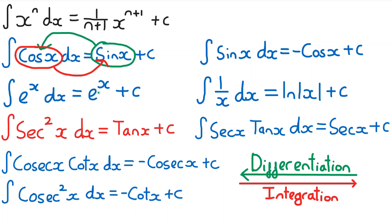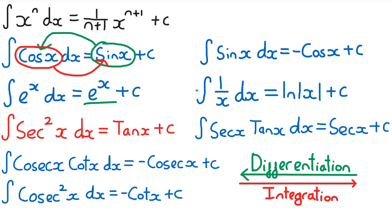The integral of e to the power of x is really simple because when you differentiate e^x it doesn't change — it's still just e^x. So when you integrate it as well, it doesn't change. And when we differentiate the natural log of x we get 1 over x, so when we integrate 1 over x we get the natural log of x.